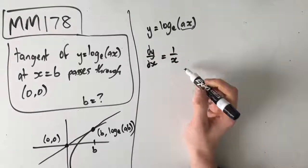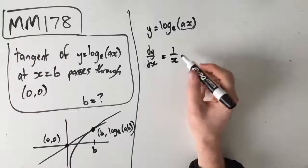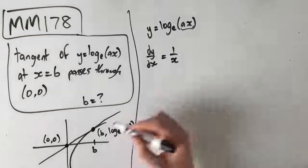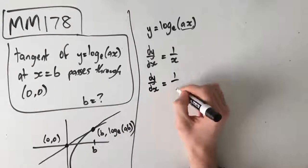You can use the chain rule by hand as well, but because this is a multiple choice, you can just use your calculator. So that's equal to 1 over x. We know that the x value at this point is b, which means that our gradient is equal to 1 over b.